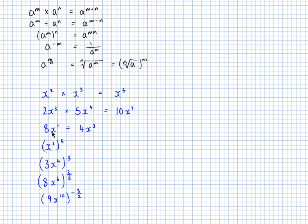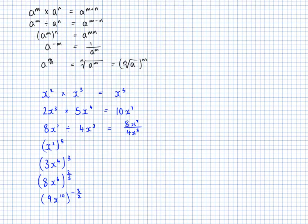For the next one, if I write it as a fraction first it's easier to see: 8x to the 7 over 4x to the 3. Now 8 divided by 4 is 2, and x to the 7 divided by x to the 3 means I subtract the powers. So this is going to be 2x to the power of 4.